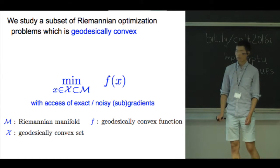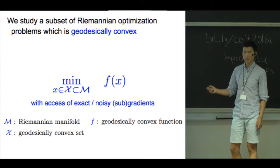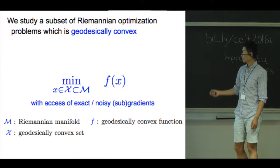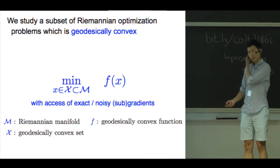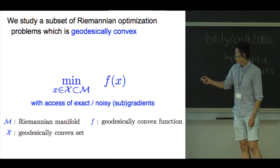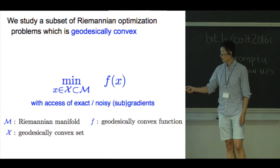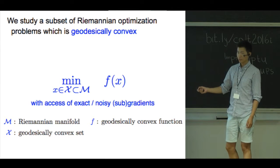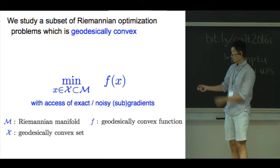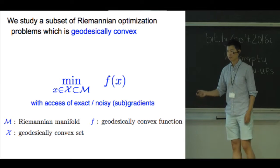In this work, we focus on the study of a subset of Riemannian optimization problems which is geodesically convex. Where we aim to minimize the geodesically convex function f over a geodesically convex set X, assuming access of a first-order oracle.